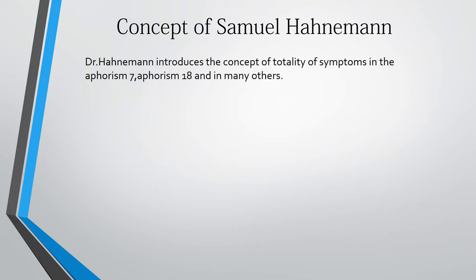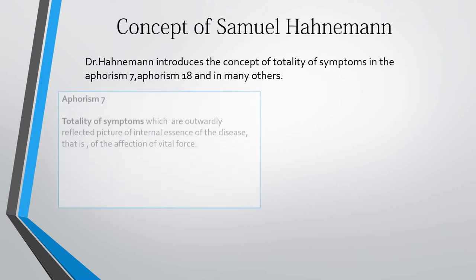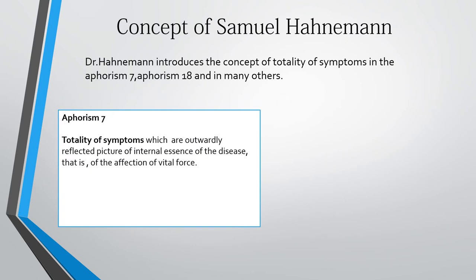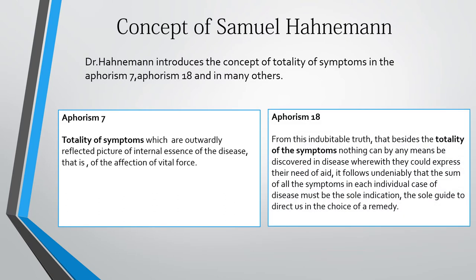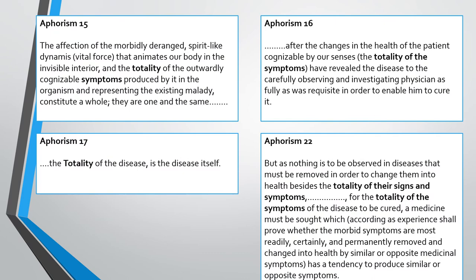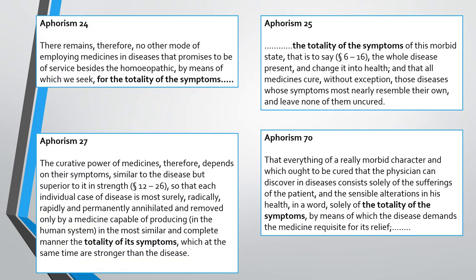According to Hahnemann, Dr. Hahnemann introduced the concept of totality of symptoms in Aphorism 7, Aphorism 18, and many others. In Aphorism 7, totality of symptoms is described as the outwardly reflected picture of the internal essence of the disease — that is, of the affection of the vital force. Aphorisms 7 and 18 are the major aphorisms on this concept, also mentioned in aphorisms 15, 16, 17, 22, 24, 25, 27, and 70.